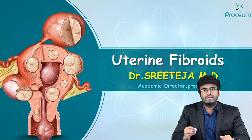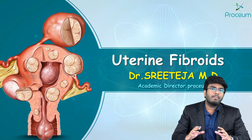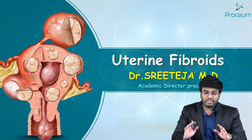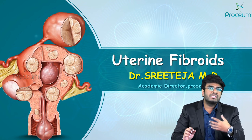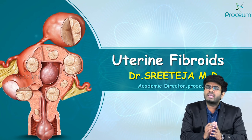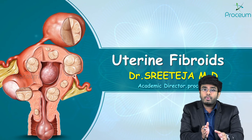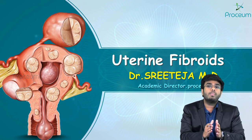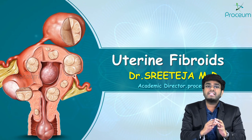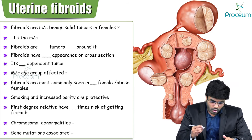In this video, let's discuss uterine fibroids. Fibroids are benign tumors — they are benign in nature, not malignant. They are tumors arising from myometrial cells, or muscle cells. We all know that the uterus is made up of three layers: the endometrium, myometrium, and perimetrium. Fibroids arise from one myometrial cell that undergoes rapid division due to certain mutations, forming the fibroid.